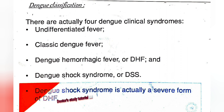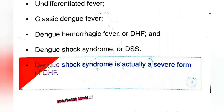The classification of dengue: there are four dengue clinical syndromes — undifferentiated fever, classic dengue fever, dengue hemorrhagic fever, and dengue shock syndrome. Dengue shock syndrome is actually a severe form of dengue hemorrhagic fever.